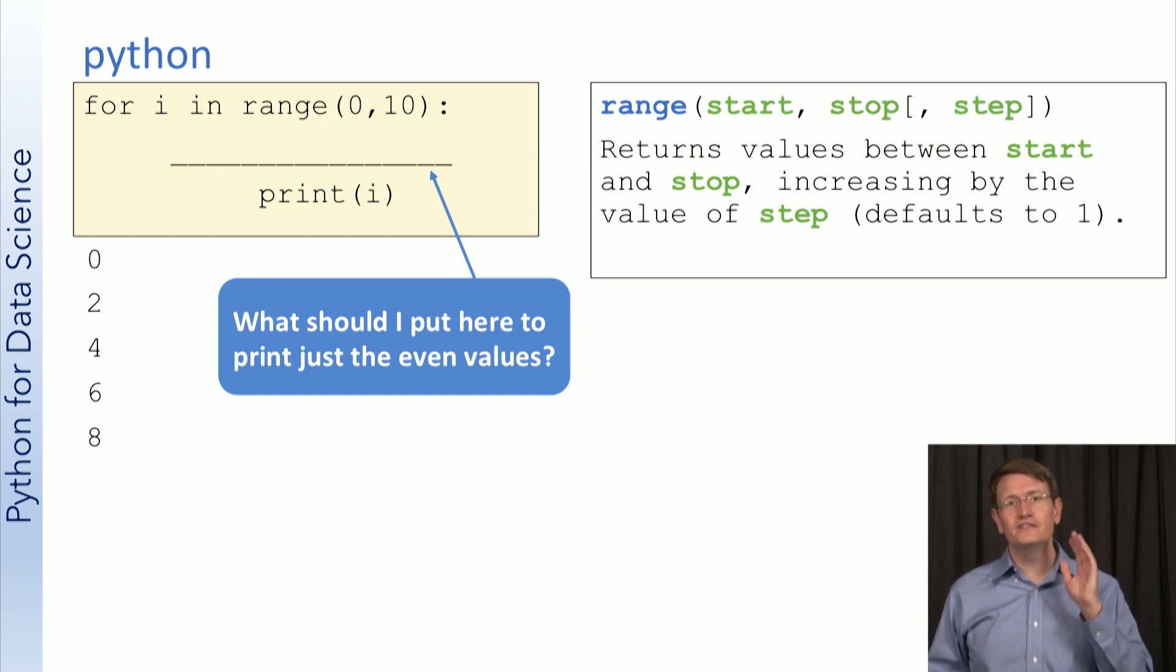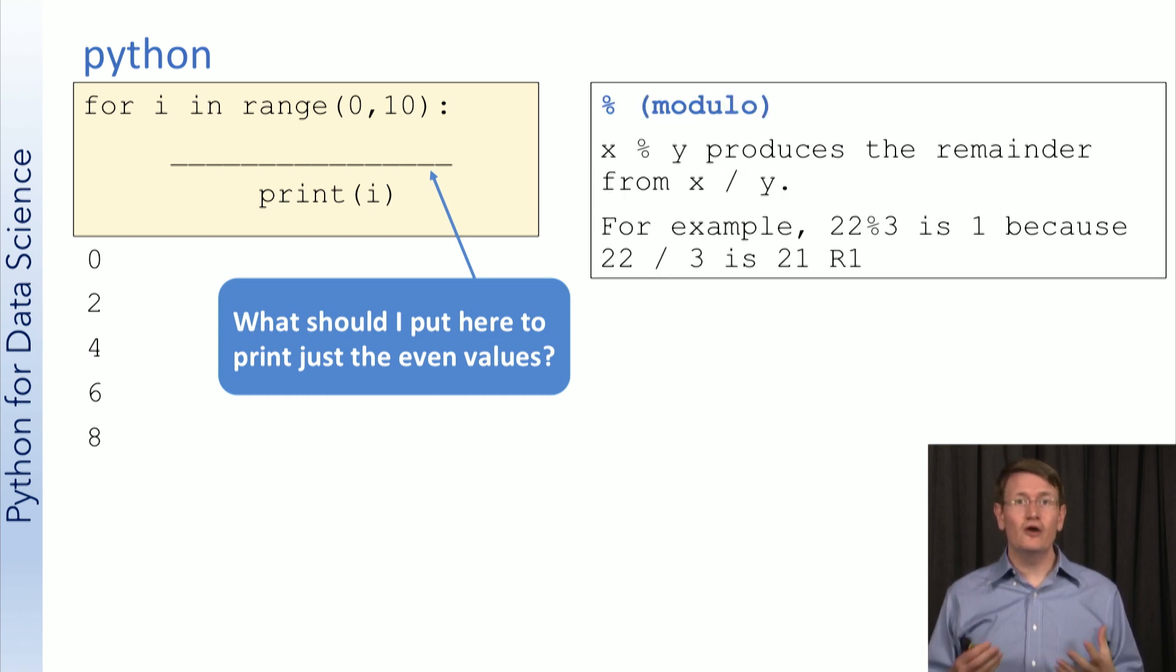Okay, to solve this, you may need to use modulo, which you may or may not be that familiar with. Modulo produces the remainder of a division of two integers. Given what you know about modulo, pause the video, take a moment to think about what you should put into this missing line of code, and then resume.